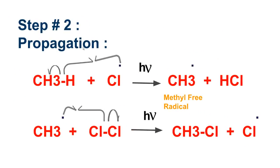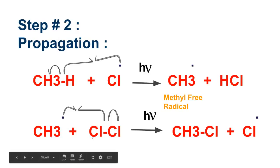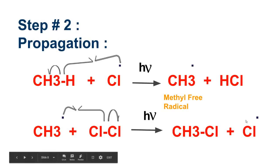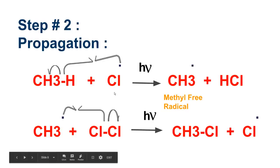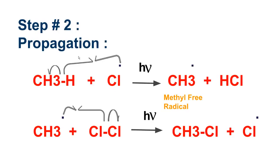This is step number two: propagation, which means to keep going. In this step, radicals produce other radicals. The methane molecule's carbon-hydrogen bond is broken homolytically — one electron meets up with the chlorine radical to form hydrochloric acid, and the other electron jumps onto the methyl group to form a methyl free radical. This methyl free radical then reacts with a chlorine molecule, breaking it homolytically, to form methyl chloride and a new chlorine free radical. So free radicals are producing more free radicals and the process propagates.